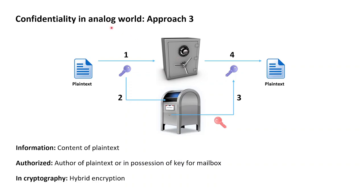A third approach that provides confidentiality in the analog world combines both previous approaches — making use of both safes and mailboxes. If Alice wants to confidentially send a plaintext to Bob, the prerequisite is that Bob owns a mailbox with a corresponding private key. Alice first goes to a hardware store and buys a completely new safe, at which point only Alice knows about the safe and has access to its keys. She then takes the safe, its keys, and her plaintext, walks up to Bob's mailbox, and places the safe next to the mailbox. She opens the safe, puts in her plaintext, and closes it.